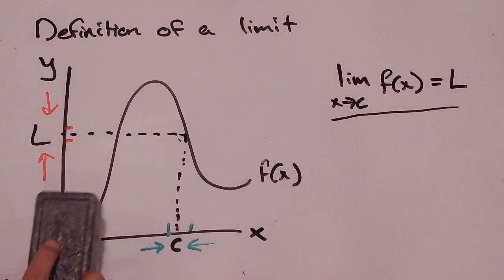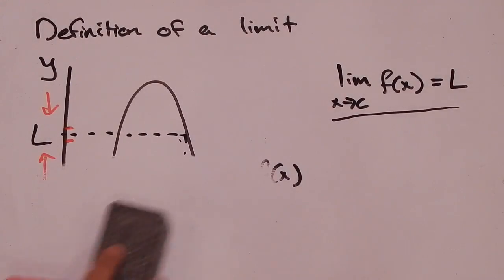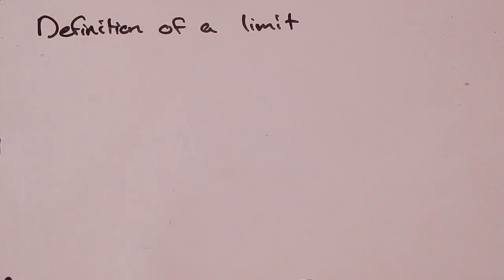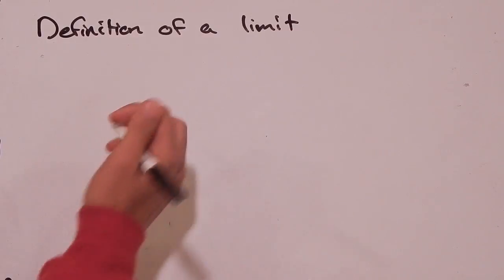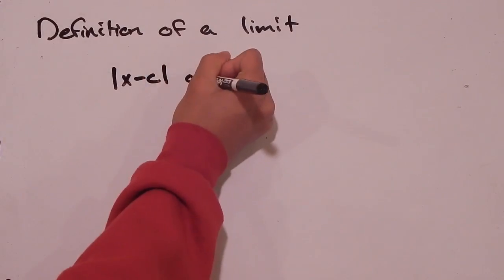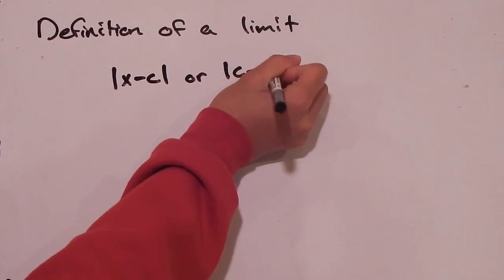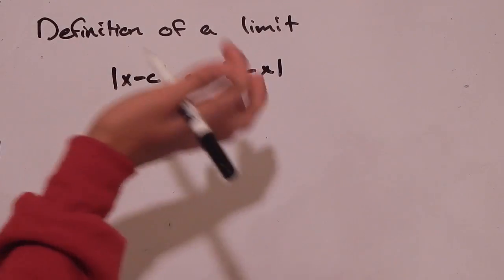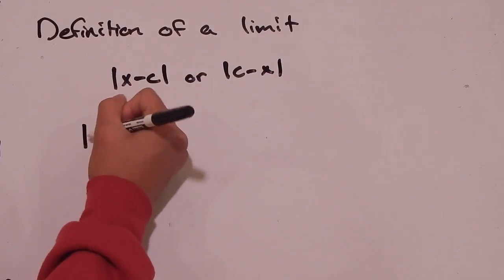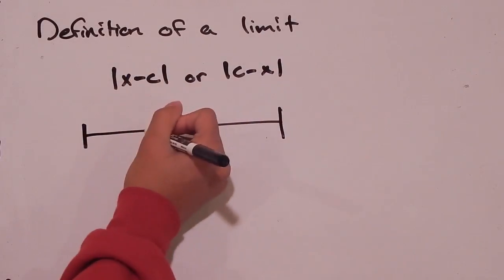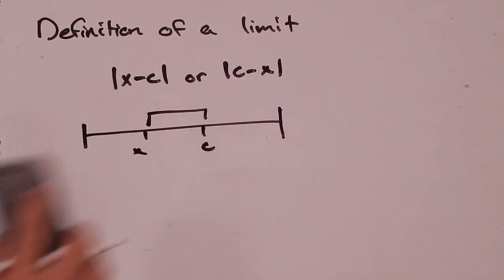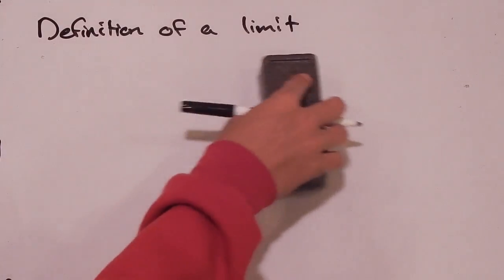For any interval around L, regardless of how small it is, if I can find a corresponding interval around c such that all the x values in that interval return f of x values in the interval around L, then I have shown that the limit as x approaches c of f of x equals L. Before we write this mathematically, I want to remind you that the absolute value of x minus c and the absolute value of c minus x are equal — they both represent the distance between x and c on a number line.